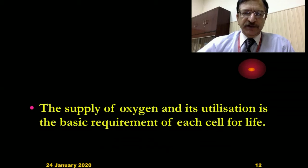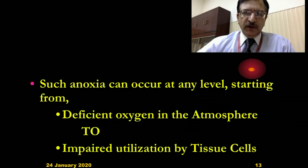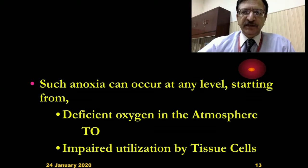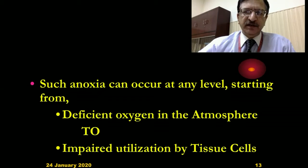The supply of oxygen and its utilization is the basic requirement of each cell for life. Anoxia can occur at any level, starting from the environmental level where there is deficient oxygen in the environment, to the final utilization at the tissue or cellular level. So any process interfering with respiration, from the environment to the utilization by cells, is asphyxia.